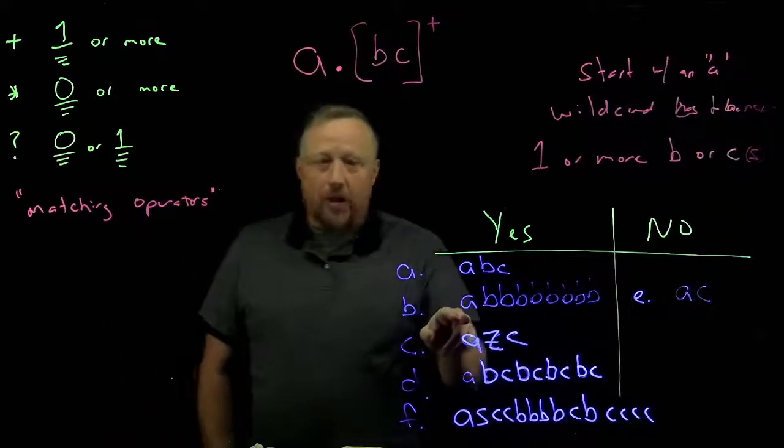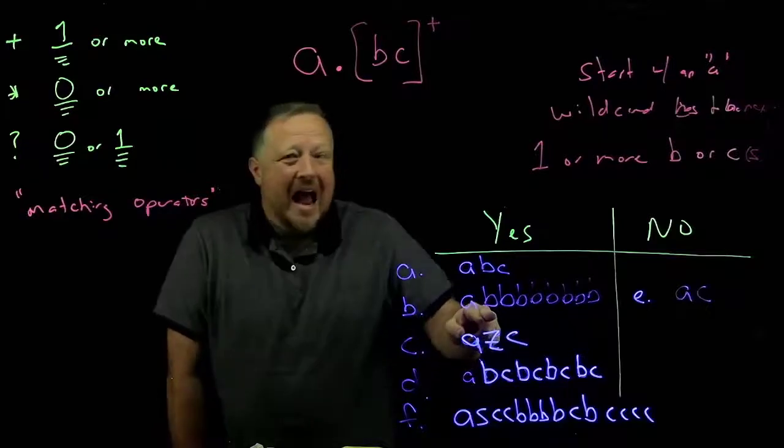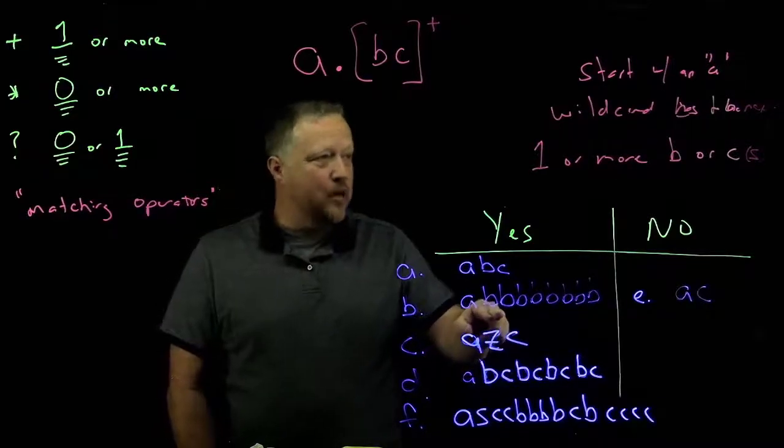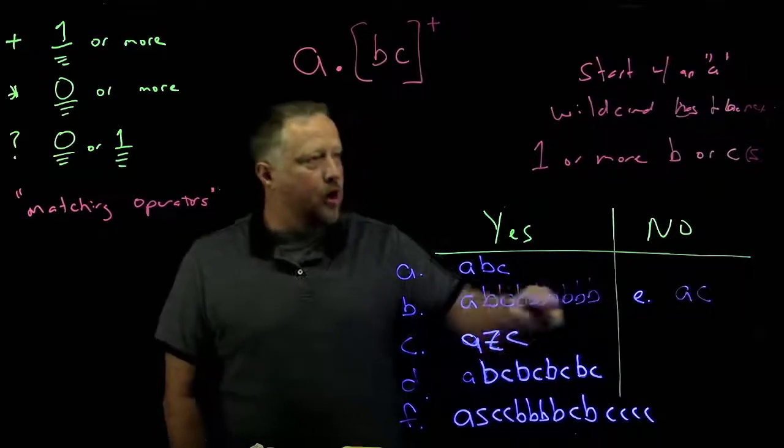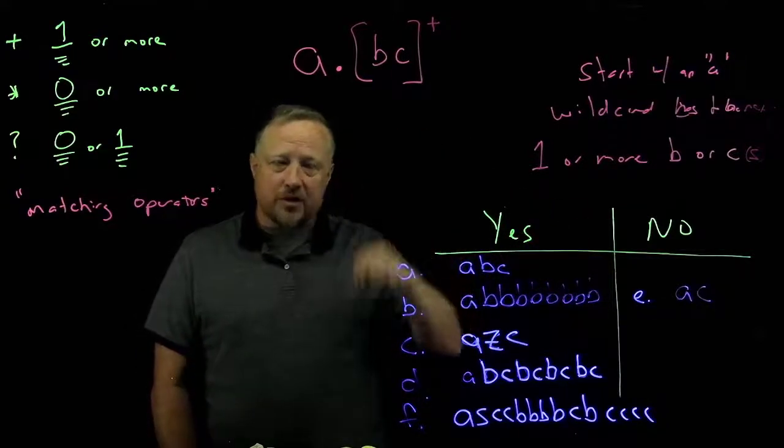Next one. Start with an A. Always start with A. So you can forget about that part. Here's my wild card. Happens to be a B. And then again, one or more Bs or Cs. So I could have had a C in there somewhere, but it didn't. Happened to be all Bs. That's just fine.